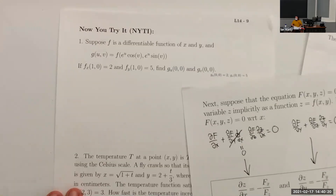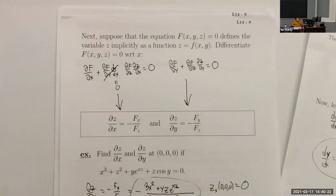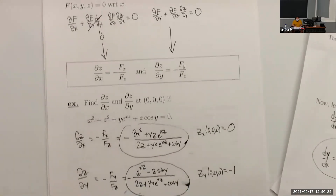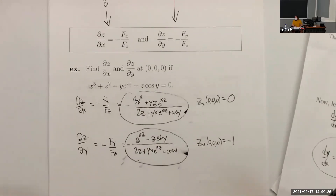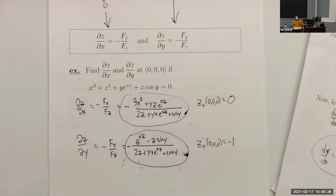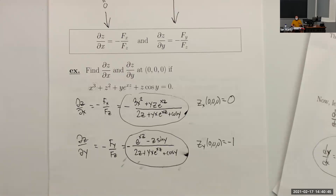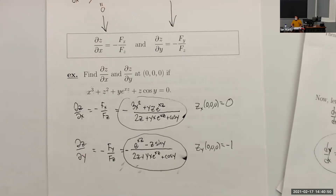That concludes the chain rule for today. Next time we'll address directional derivatives: we know how to differentiate in the x direction and the y direction, but what if we want the rate of change moving diagonally — some combination of x and y? That's what we'll cover next class.